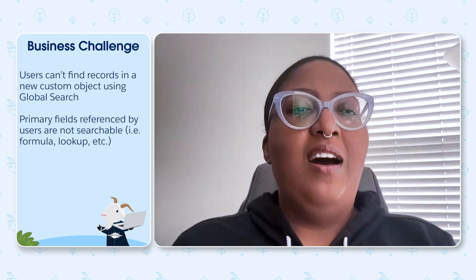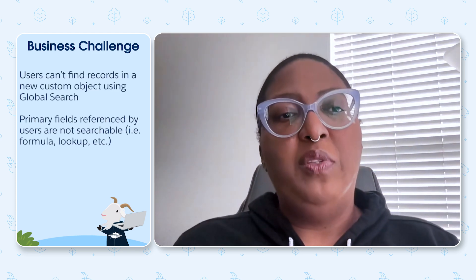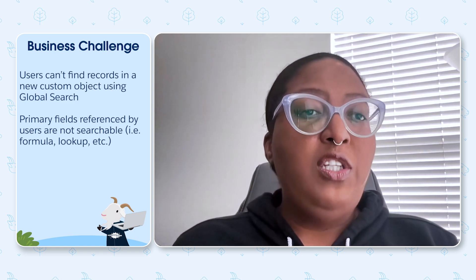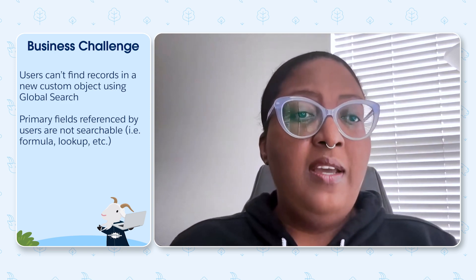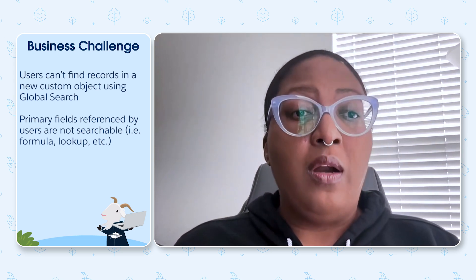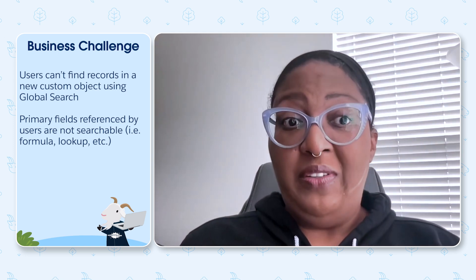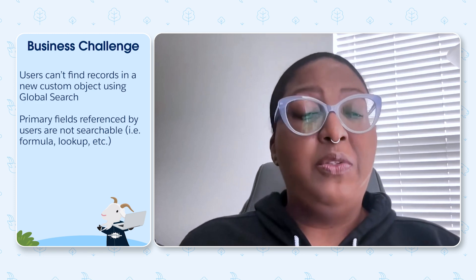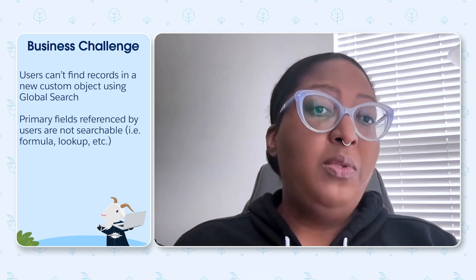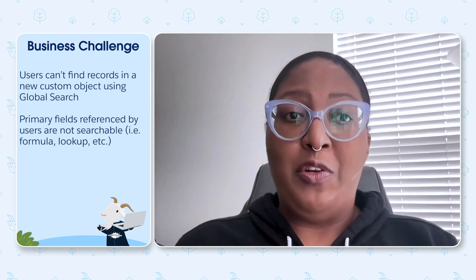What I found was that users were not able to find records in a custom object I built. I started to look through some of the permissions, but I realized the key issue was that the fields they were searching for were not actually searchable. I found that through some research in Salesforce help articles. So the first thing I needed to do was try to figure out how we can make these records searchable. All right — demo time. Take it away, Dee.